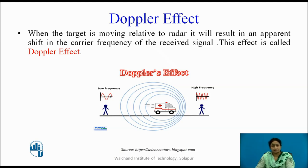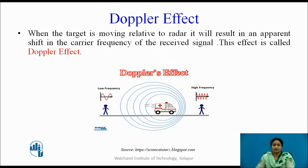When a moving target is present, we use the Doppler effect. When a target is moving relative to the radar, it results in an apparent shift in the carrier frequency of the received signal. This effect is known as the Doppler effect.